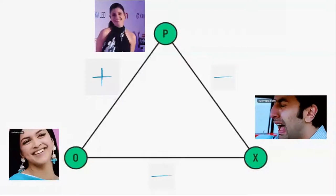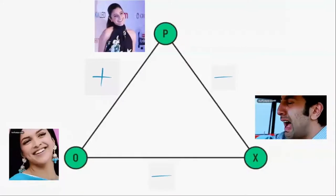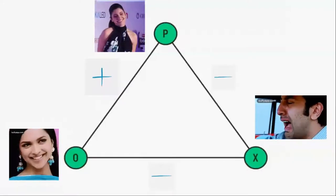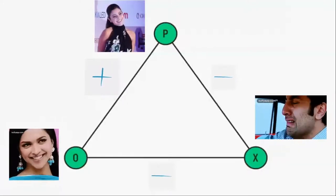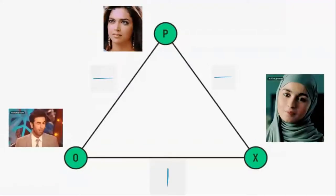My friend's enemy is my enemy. So Anushka likes Dipika but Dipika does not like Ranbir, so Ranbir is an enemy of Dipika. So Anushka also starts to dislike Ranbir. And Ranbir likes Alia, that means Dipika will start disliking Alia.